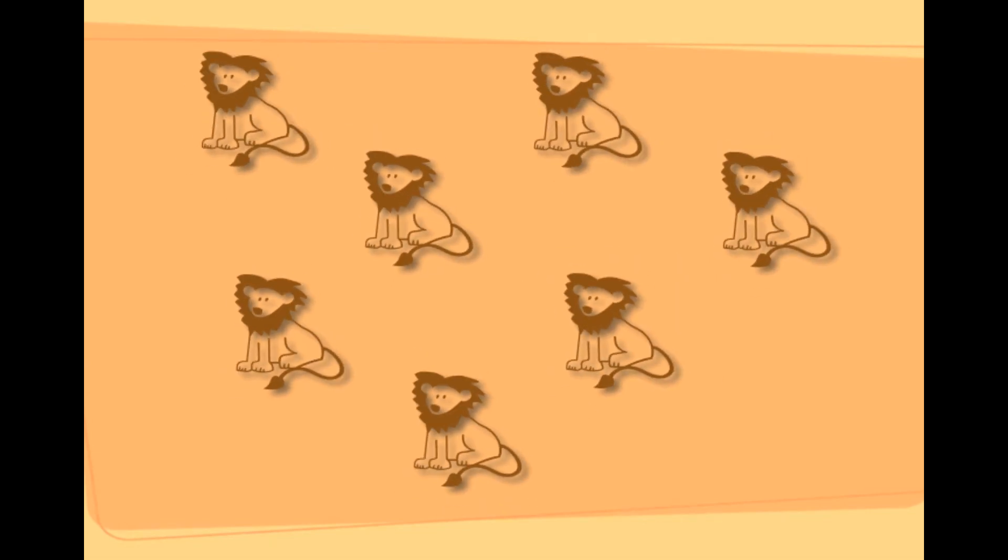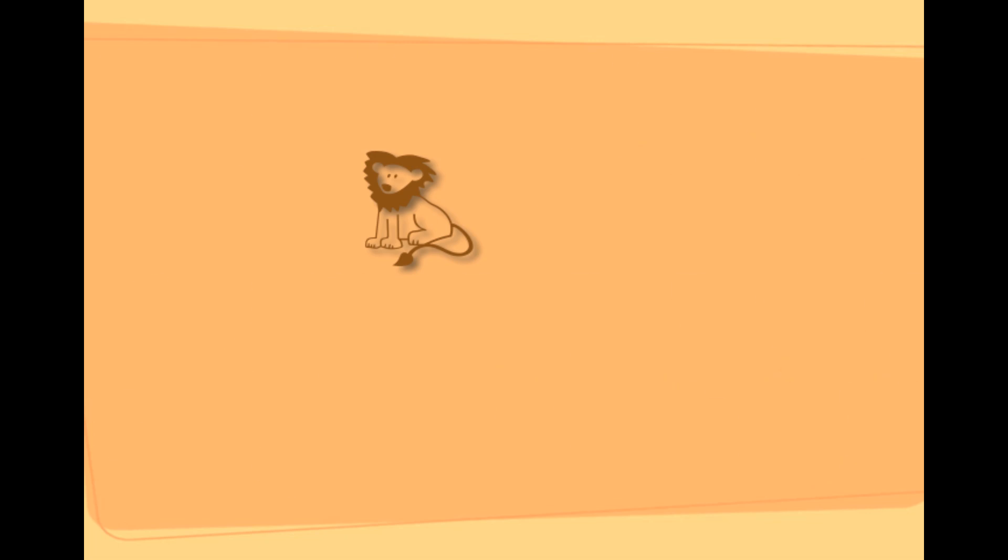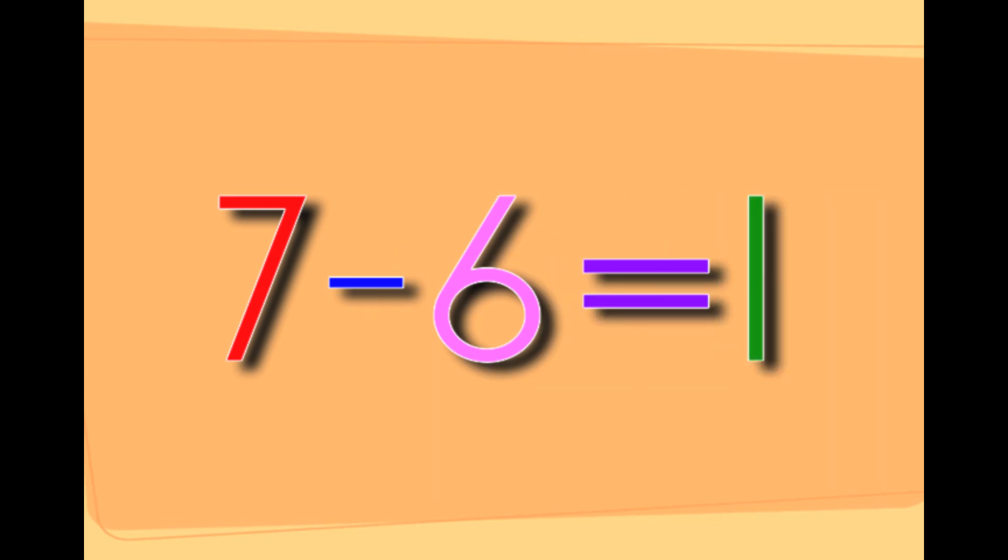This is seven lions. Now taking six lions away from the seven lions will leave you with one lion. Seven minus six equals one.